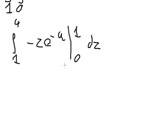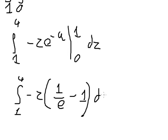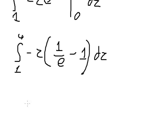We put number one and number zero in here, and we have one over e minus number one, dz. So the integral of z with respect to z gives us negative z squared over two, multiplied by one over e minus one.